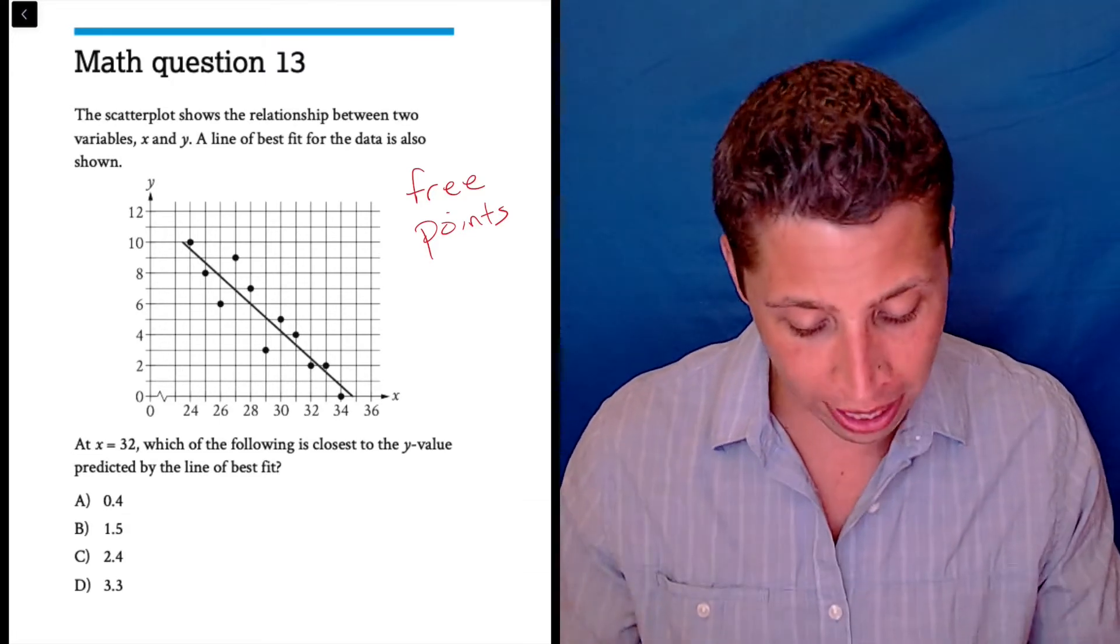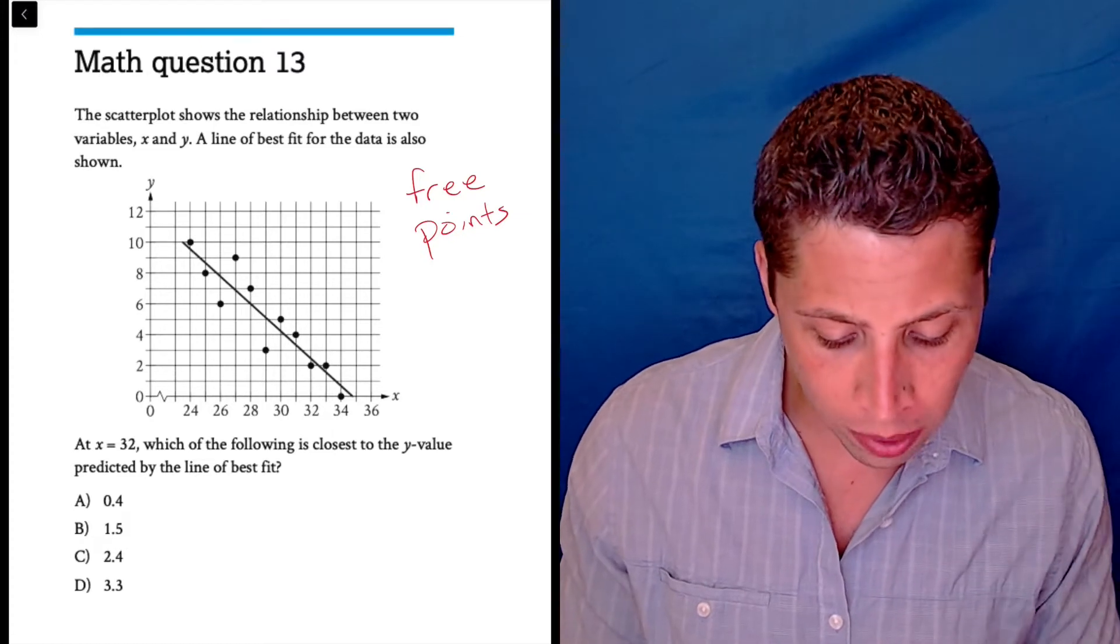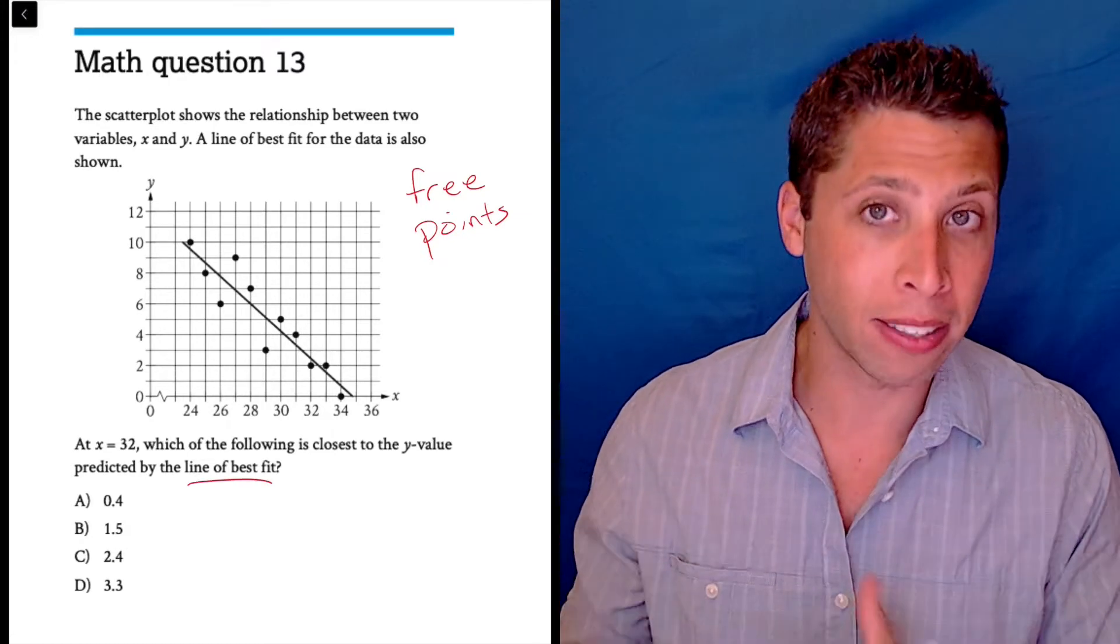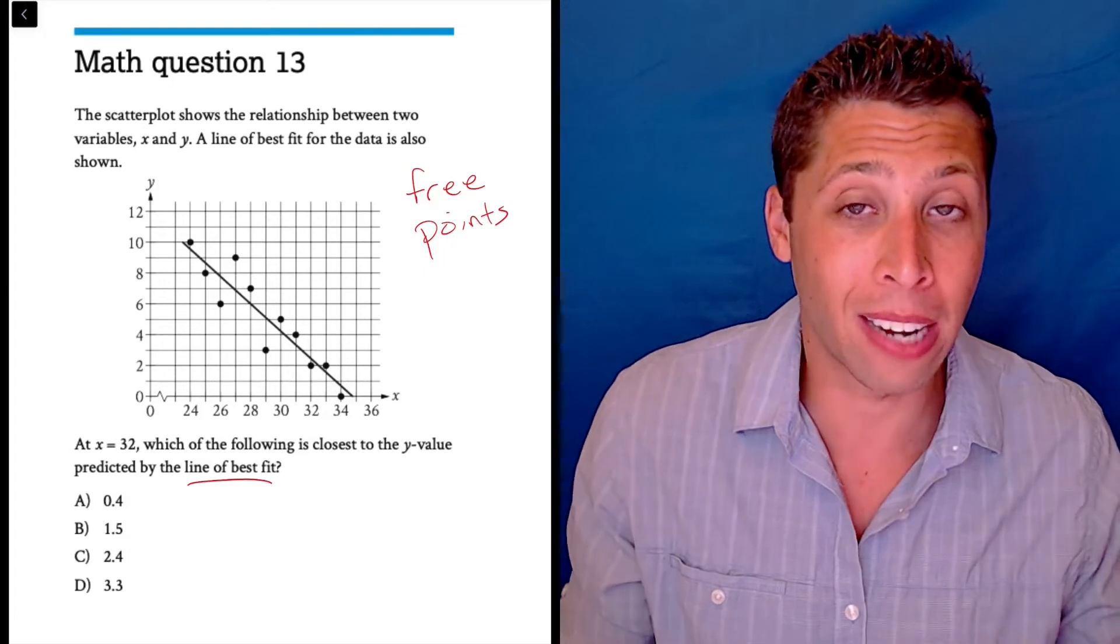There might be some terminology here we don't know. A scatterplot is this, and when they ask about the line of best fit, they're not asking about those little dots, they're asking about the line, so hopefully that's kind of intuitive.